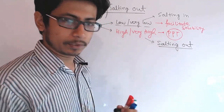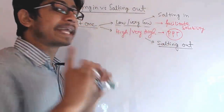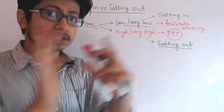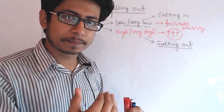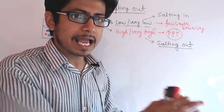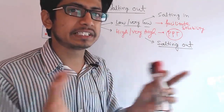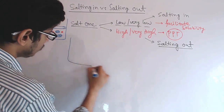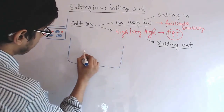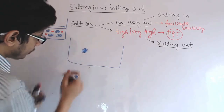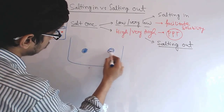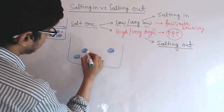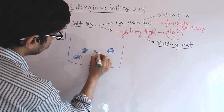To understand the mechanism of why salting in and salting out take place, you need to know about solute-solvent interaction — how this interaction plays out between a protein and water or aqueous solution, and how salt is going to interfere with this interaction. Normally in the mixture, proteins are interacting with surrounding water molecules.